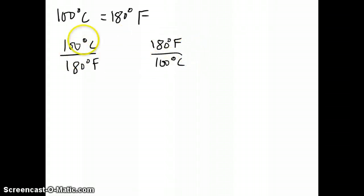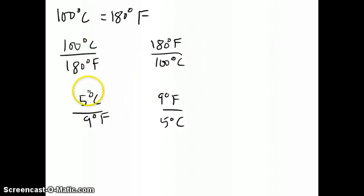Whichever way it expresses, this expression can be reduced down to 5 degrees Celsius to 9 degrees Fahrenheit, or 9 degrees Fahrenheit to 5 degrees Celsius. That's the lowest whole number ratio of these two numbers right here, or you can make it a 1.8 to 1 in this one, or 1 to 1.8, but usually I just use the 5 over 9. That's your conversion factor.